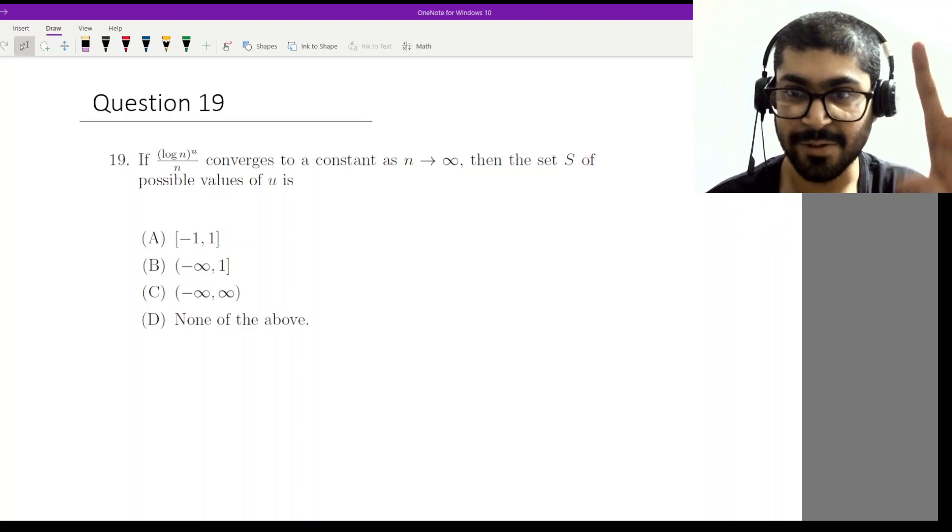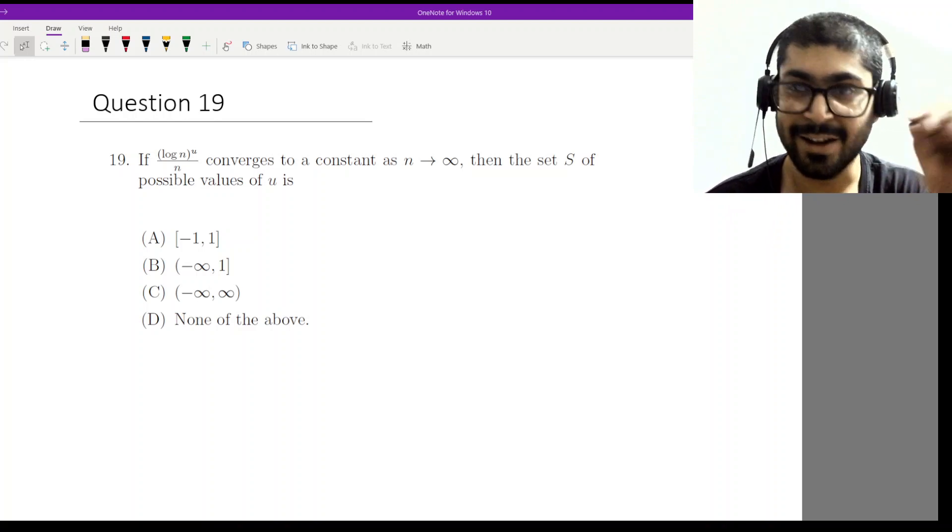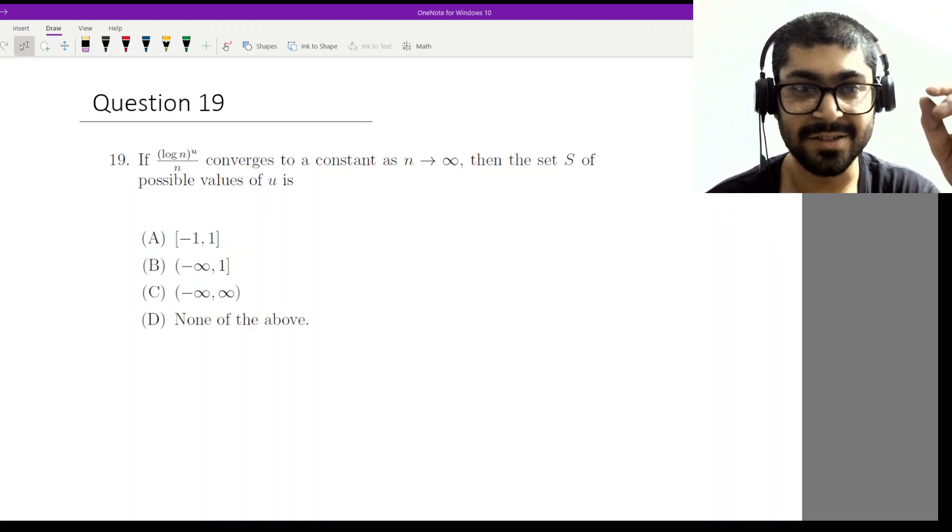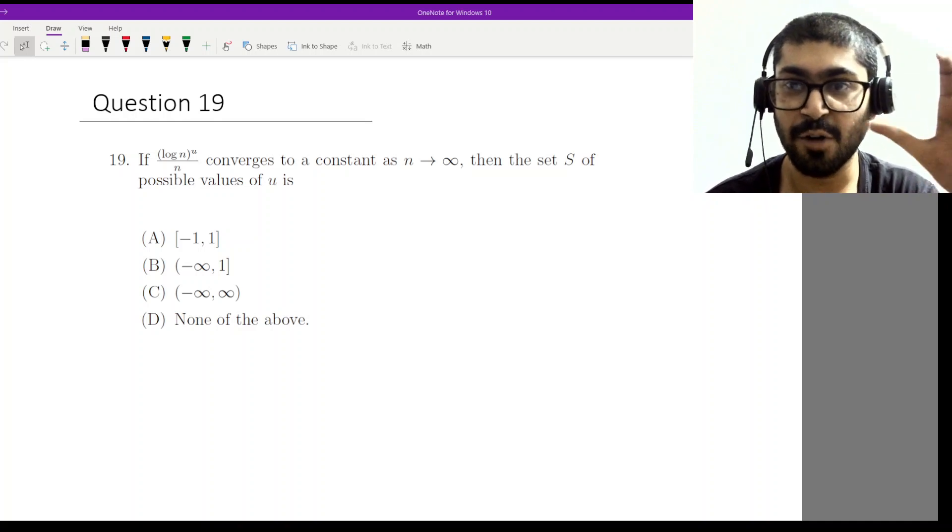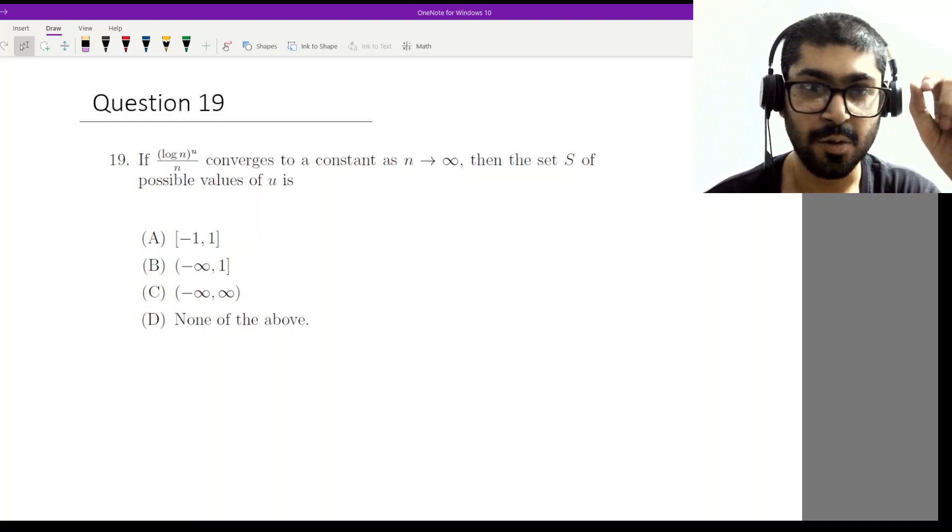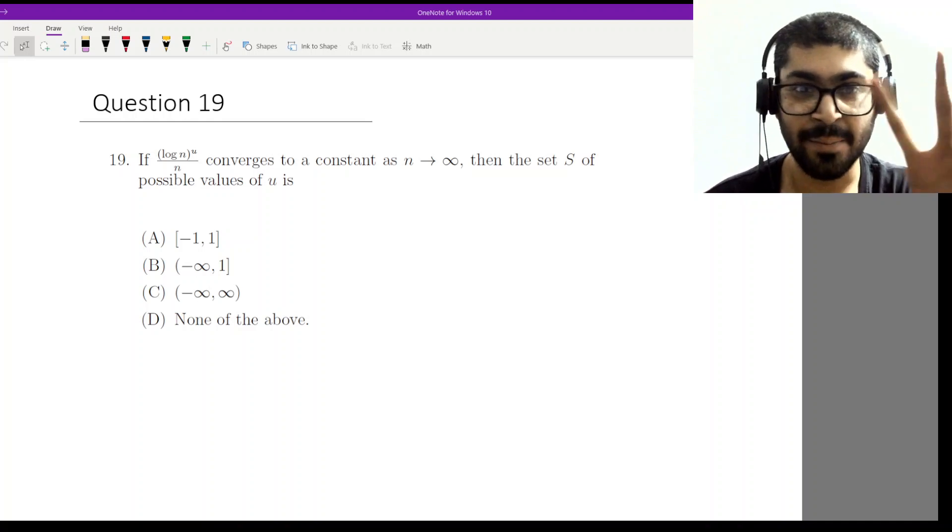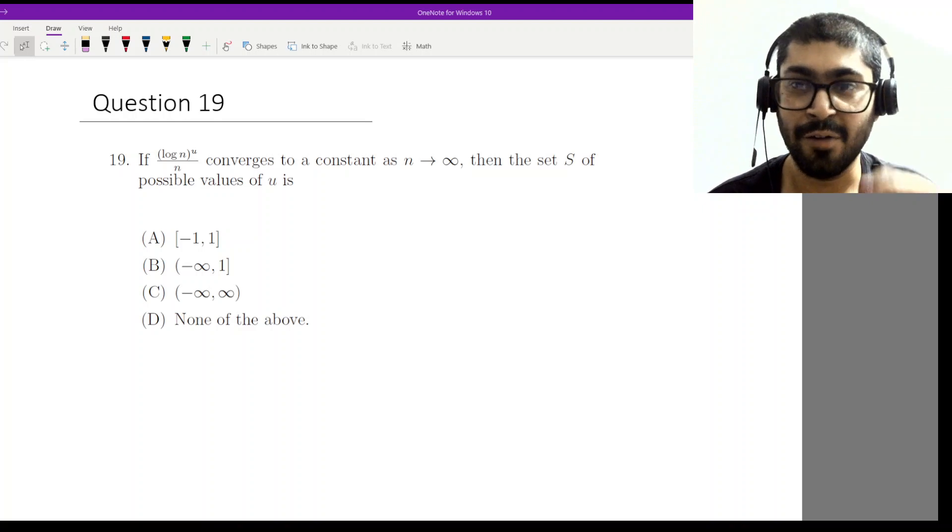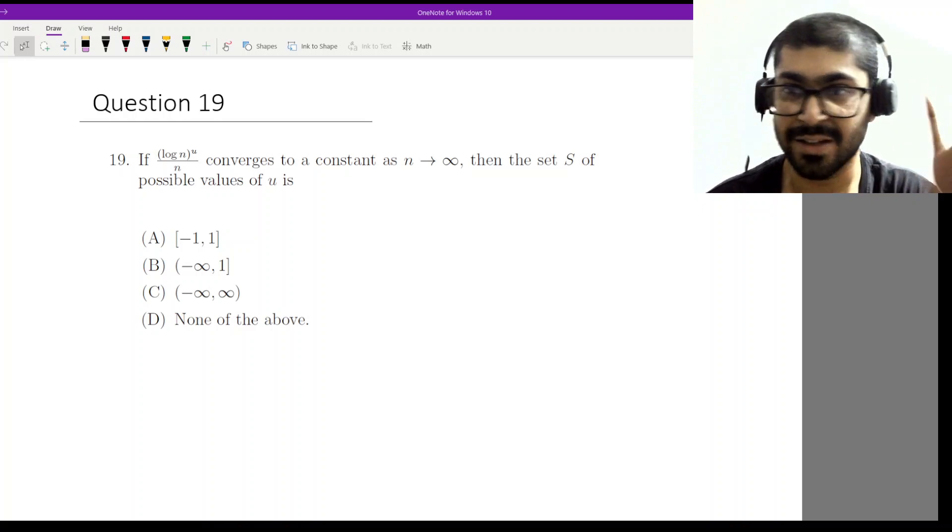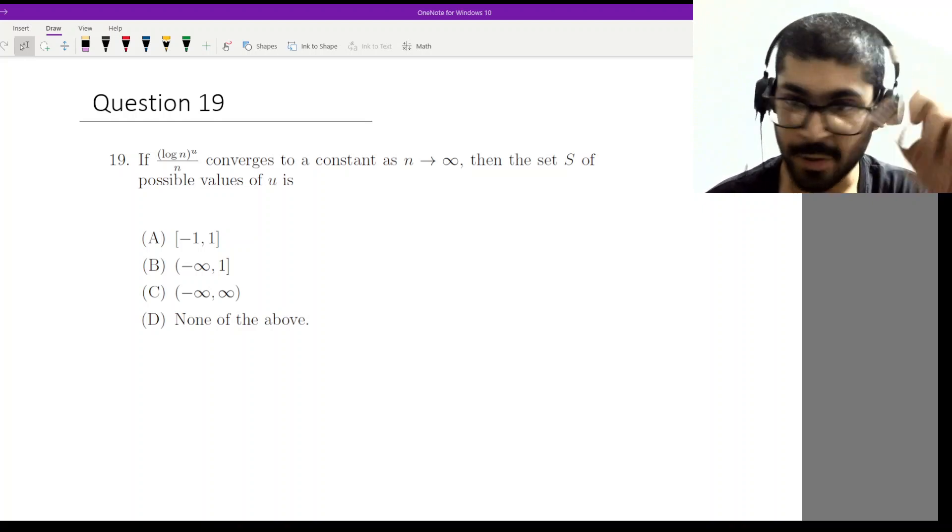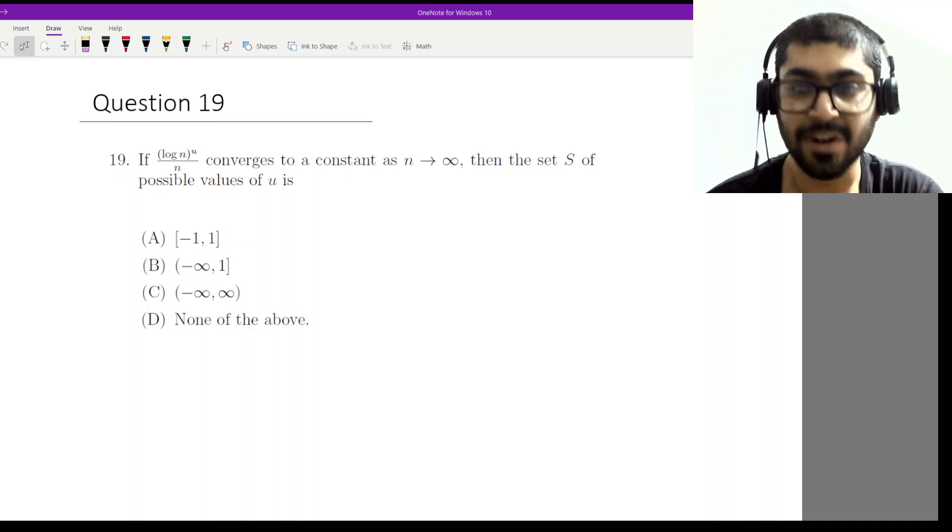Now let us have a quick glance at the options. Ignoring none of the above, let us check what the options look like. All of them are in form of some ranges. So let us pick one value that is common among a few options and test it. I can see that the value of u equal to one is present in all of a, b and c. So what happens at u equal to one? Let us see how does the function behave?